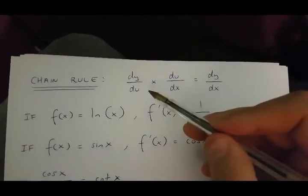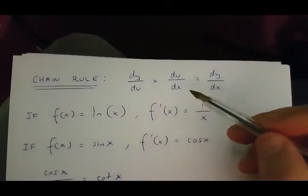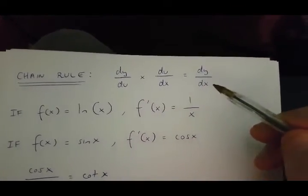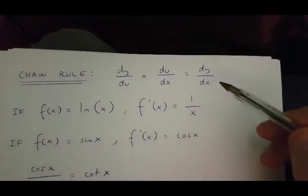Now, using the chain rule, which is dy over du times du over dx, we are going to discover what dy over dx is.